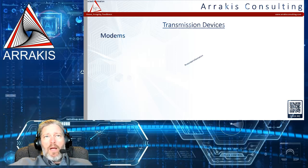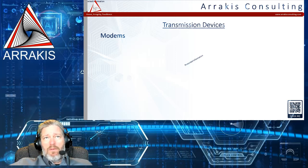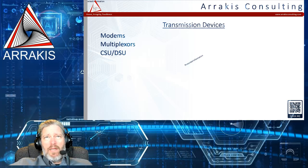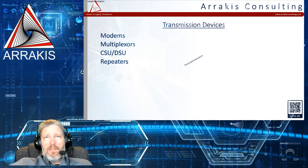A popular transmission device at the physical layer is the modem — though if you have one, you might be living in 1980. You can also have multiplexers, CSU/DSUs (used for T1 lines, either internal to your router or external), and repeaters. A repeater takes a signal and amplifies it — both the good data and the noise on that line.